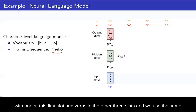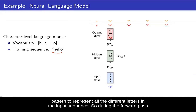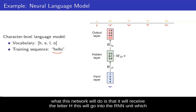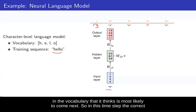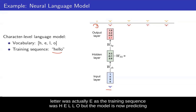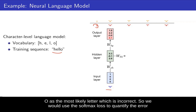During the forward pass, the network receives the letter H, which goes into the RNN unit and produces the output Ŷ. The network makes a prediction about each letter in the vocabulary that it thinks is most likely to come next. In this time step the correct letter was E, as the training sequence was H, E, L, L, O. But the model predicts O as the most likely letter, which is incorrect. We would use the softmax loss to quantify the error with these predictions.